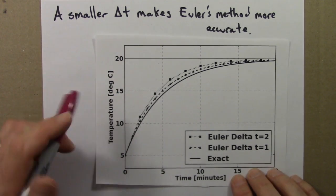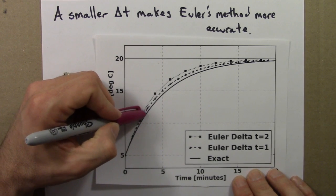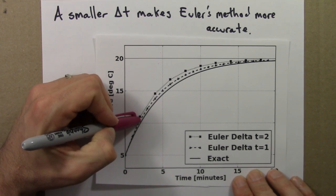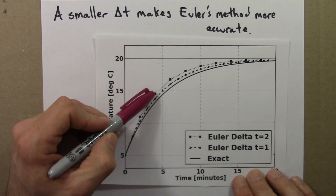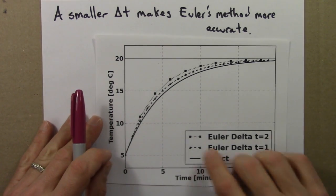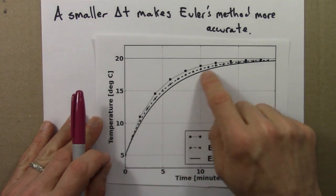Delta t of 1, that's the triangles with the dashed and not dotted line. It's a little hard to see, but the key thing is it's between these two. It's closer to the exact solution, which is the solid curve.